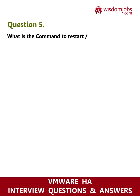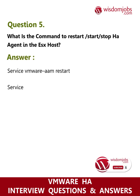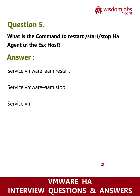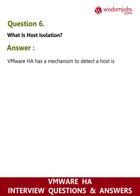Question 5: What is the command to restart, start, and stop the HA agent on the ESX host? Answer: To restart: 'service vmware-arm restart'. To stop: 'service vmware-arm stop'. To start: 'service vmware-arm start'.